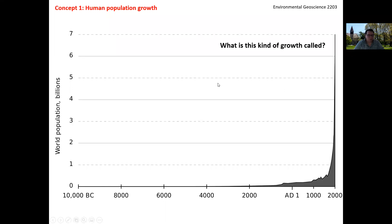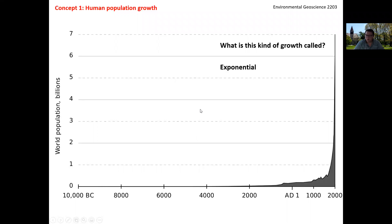This type of curve is called an exponential growth curve. It's striking to realize that even as recently as 10,000 BC — 12,000 years ago, the end of the last ice age — there were just a few hundred million people on Earth, and we've seen pretty much exponential growth throughout the last period, inexorably heading toward about nine to ten billion people.